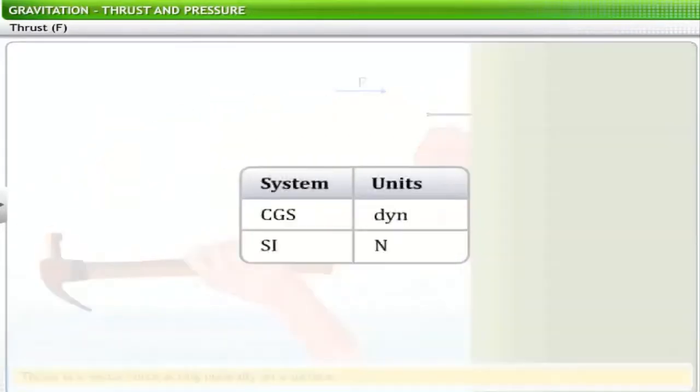Thrust is measured in dyne in the CGS system and newton, denoted by N, in the SI system.